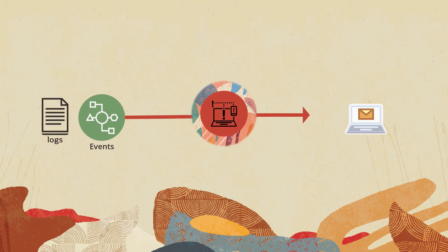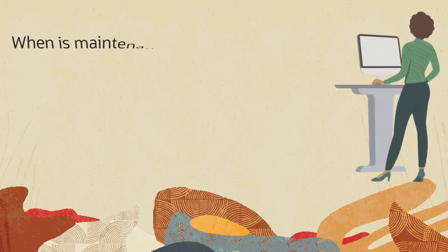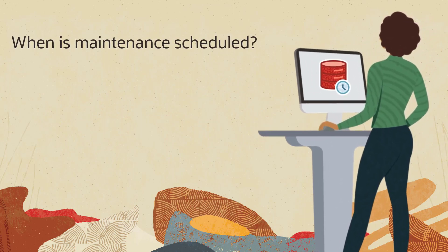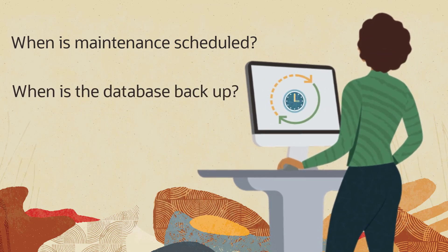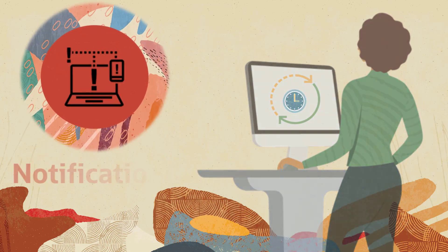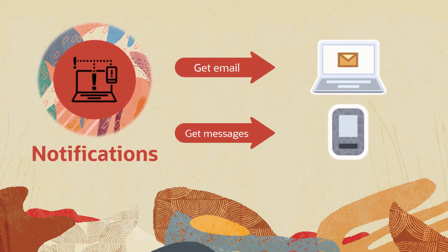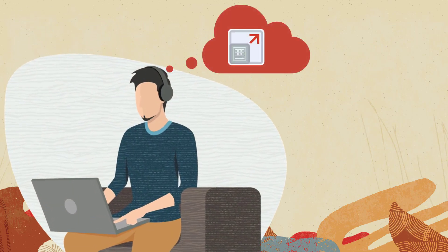For example, you can get email whenever an event is logged. Do you want to know when a maintenance reminder is logged for a database, and when the database comes back up after maintenance is completed? With Notifications, you can get email and SMS for each of these events.